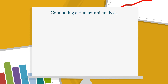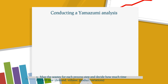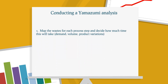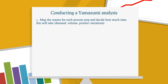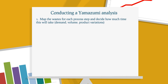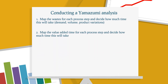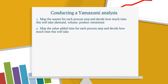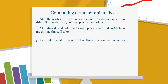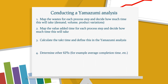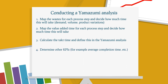Conducting a Yamazumi Analysis. Step 1: Map the wastes for each process step and decide how much time this will take. Step 2: Map the value added for each process step and decide how much time this will take. Step 3: Calculate the takt time and define this in the Yamazumi Analysis. Step 4: Determine other KPIs, for example, average completion time, etc.